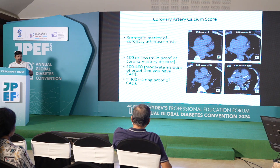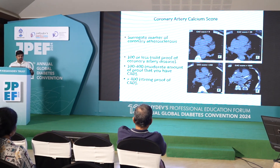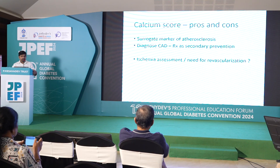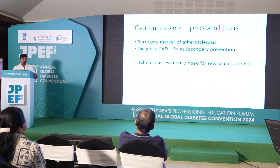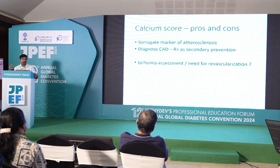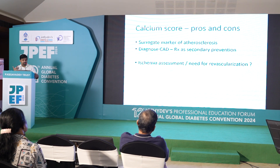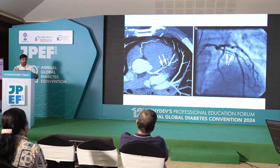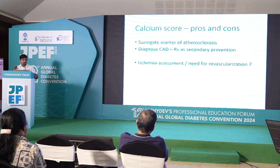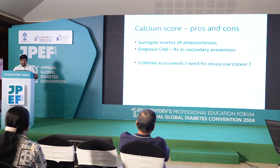If you have a higher calcium score, there is a higher chance that you have coronary disease. It is not a one-to-one correlation, but it is still useful. If you have a moderate amount of calcium, you can diagnose them with coronary disease and put them in the secondary prevention category with intensive medical management. The requirement for a conventional angiogram and revascularization has to be thought through carefully, because calcium can be present just with aging without atherosclerosis, and calcium may be present in the outer layers of the coronaries which may not indicate ischemia.